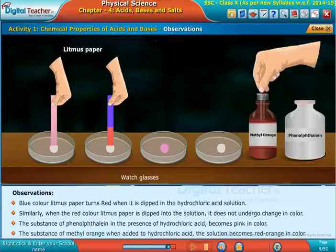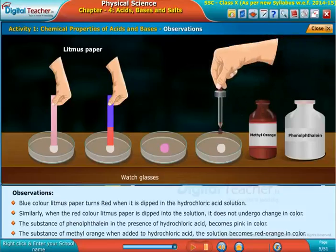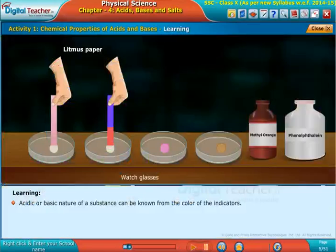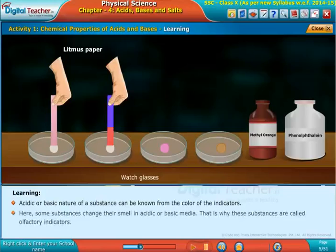Acidic or basic nature of a substance can be known from the color of the indicators. Here, some substances change their smell in acidic or basic media. That is why these substances are called olfactory indicators.